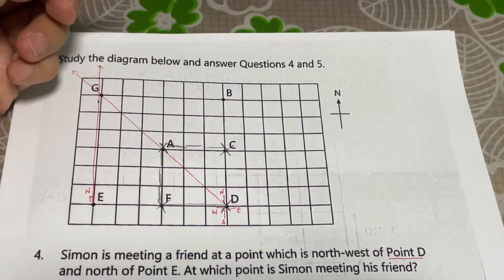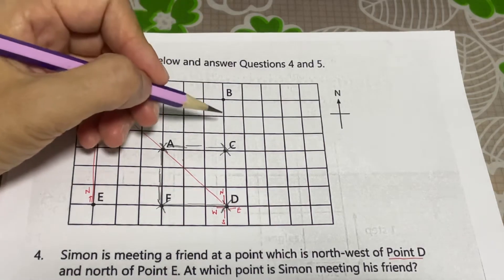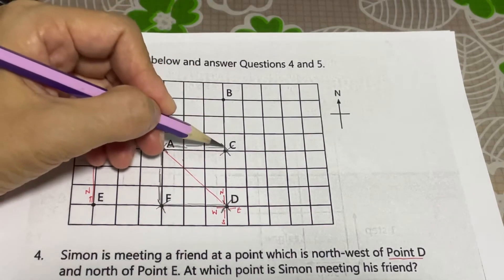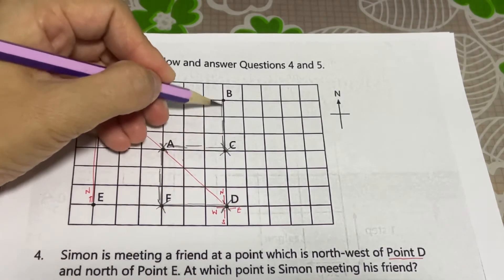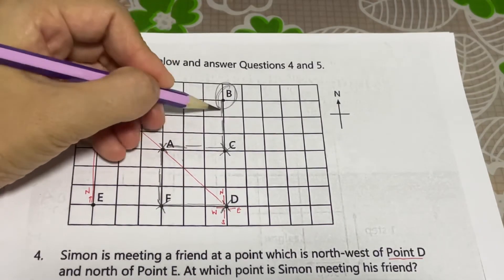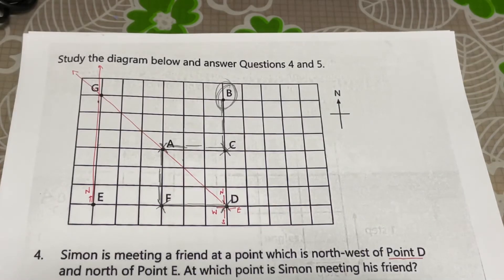Finally, 3 steps to the north to meet up with Jessie. North is upwards. So, 1, 2, 3. Where is Jessie? See? 1, 2, 3.